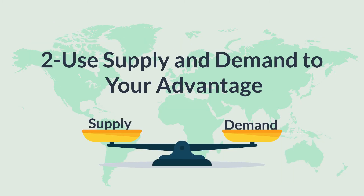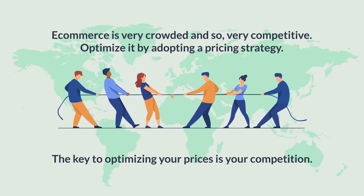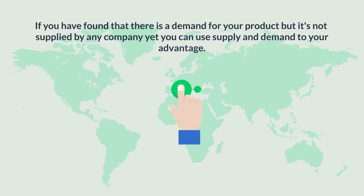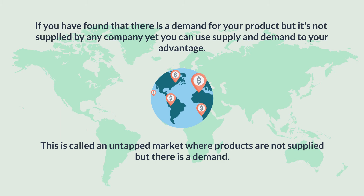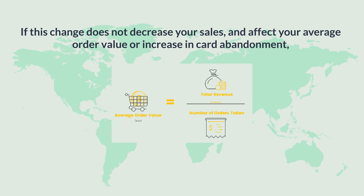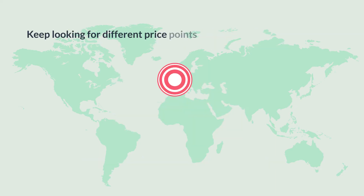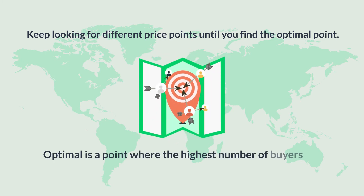Use supply and demand to your advantage. E-commerce is very crowded and competitive, so you need to optimize your pricing strategy. If you have found that there's demand for your product but it's not supplied by any company yet, you can use supply and demand to your advantage — this is called an untapped market. In this situation, start charging different prices in different markets. If this change doesn't decrease your sales or increase cart abandonment, continue looking for different price points until you find the optimal point — where the highest number of buyers are likely to buy.